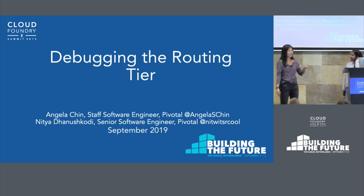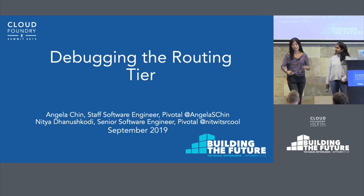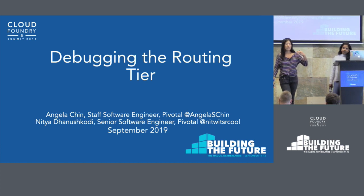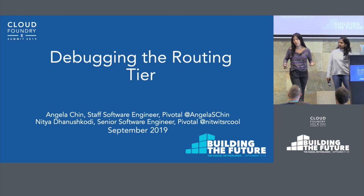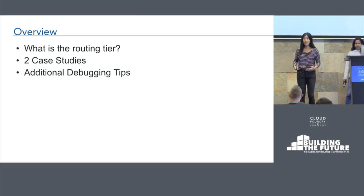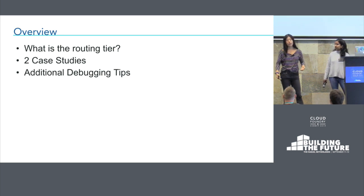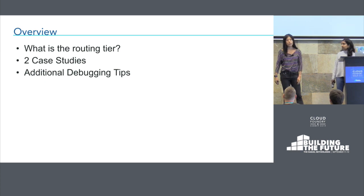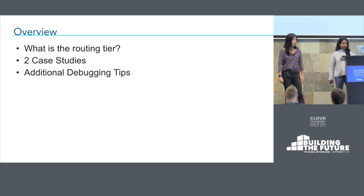The goal of the next 30 minutes or so together is that by the end of this presentation everyone in the audience has a shared understanding of what the routing tier is and has some tools and tips in their bag for debugging the routing tier, and maybe even just debugging problems in general. Our plan is to start by level setting on what exactly is the routing tier, before looking at two actual case studies that me and Nithya have debugged as members of the CF networking program, and then cap it off with some additional general debugging tips.